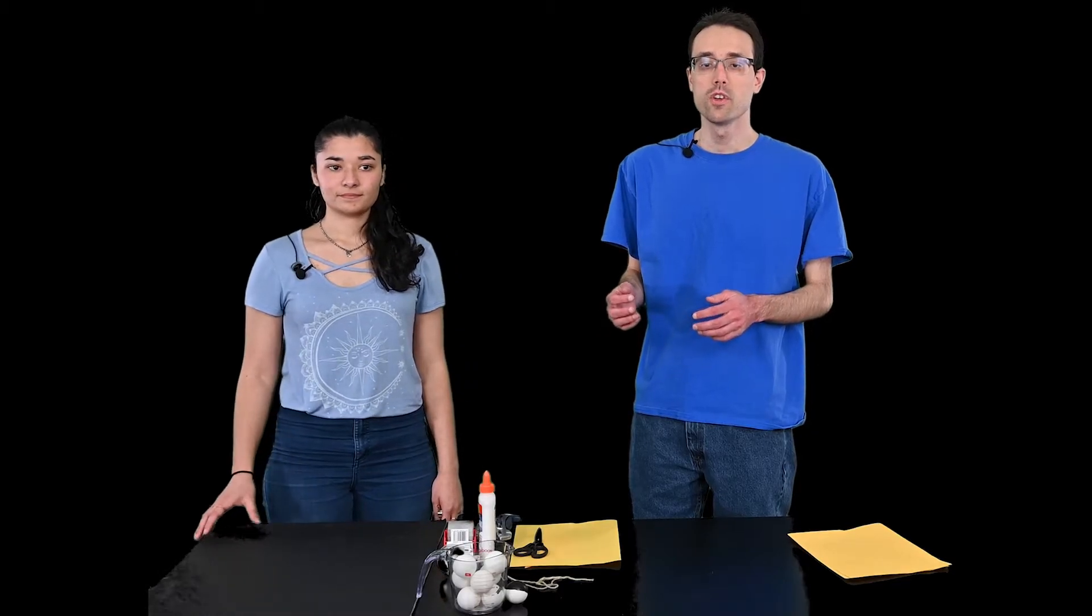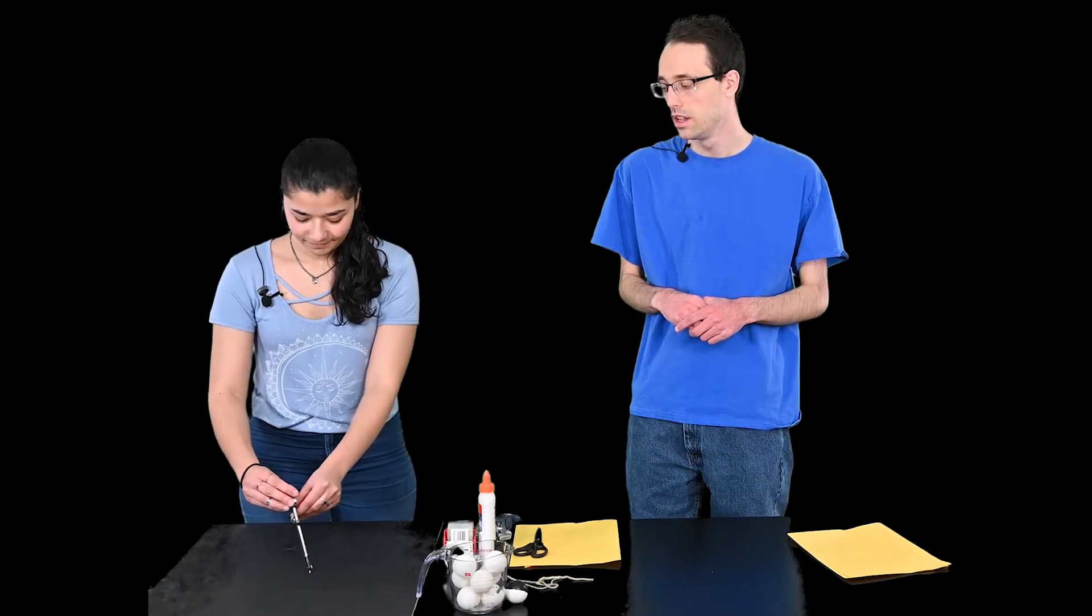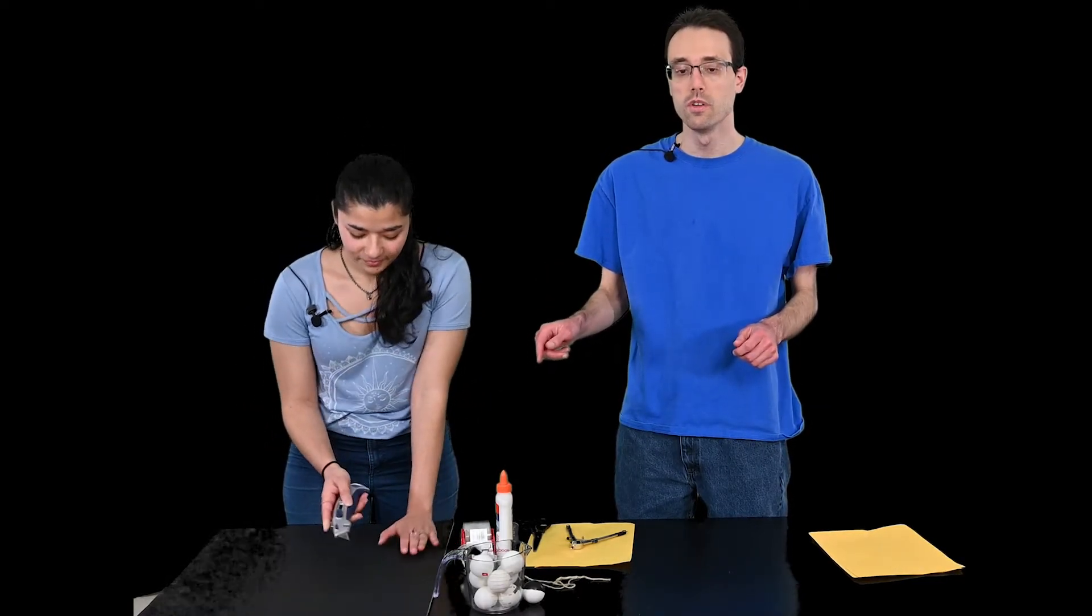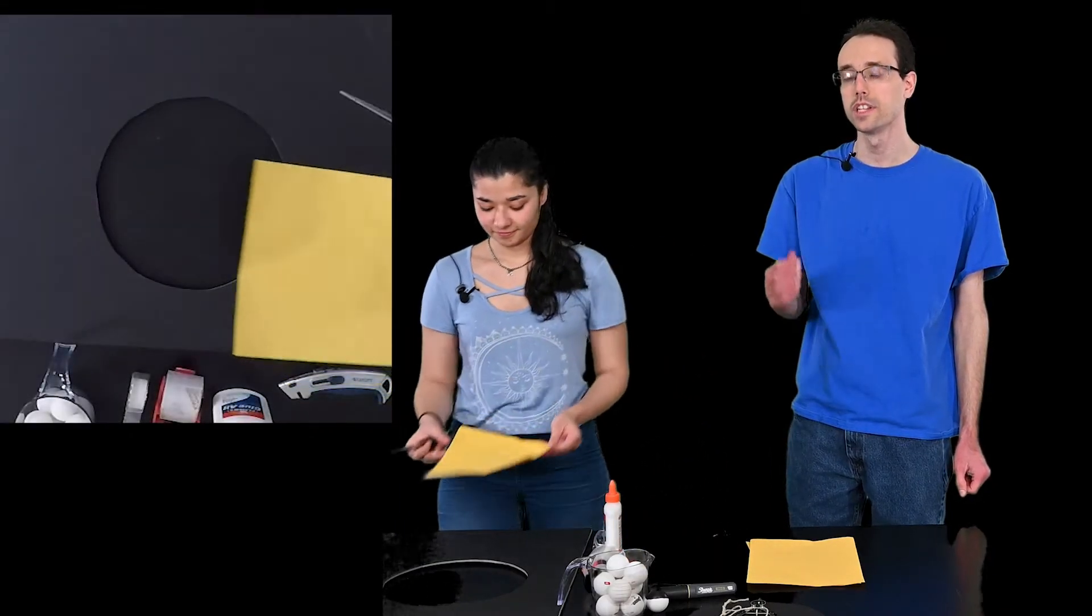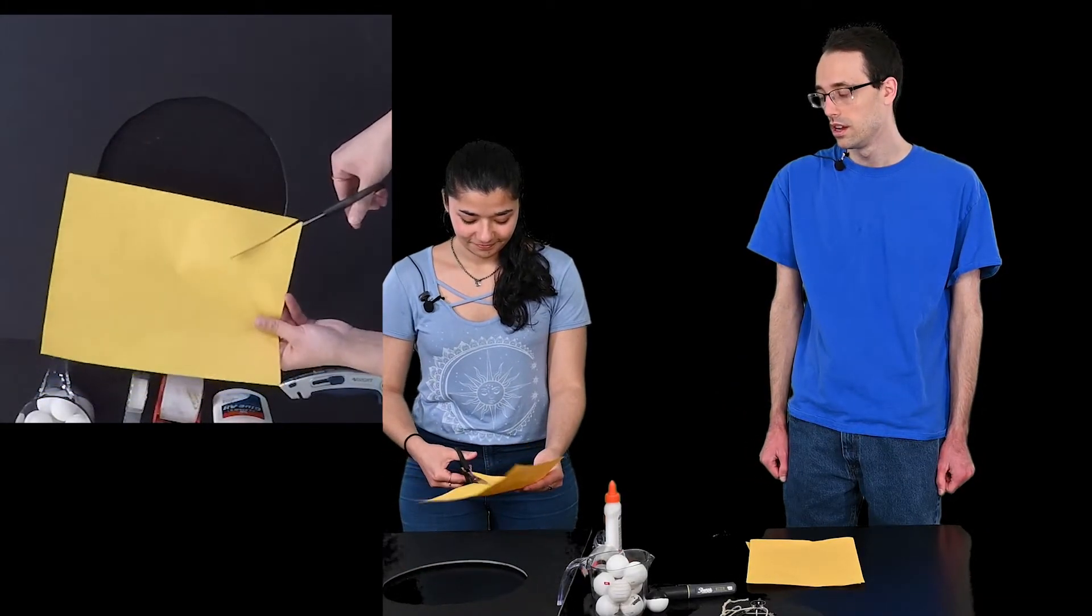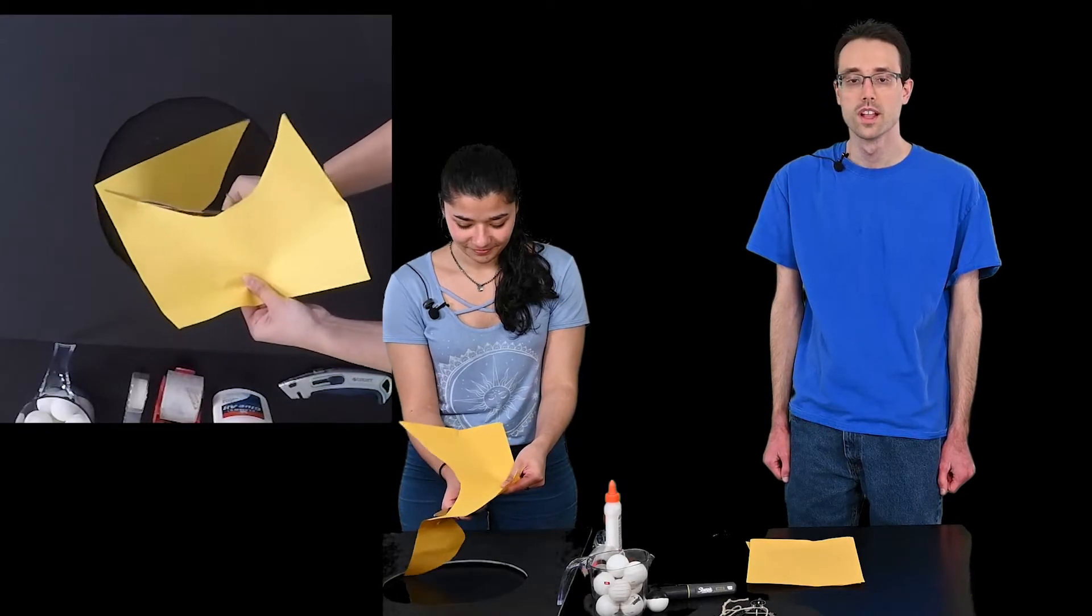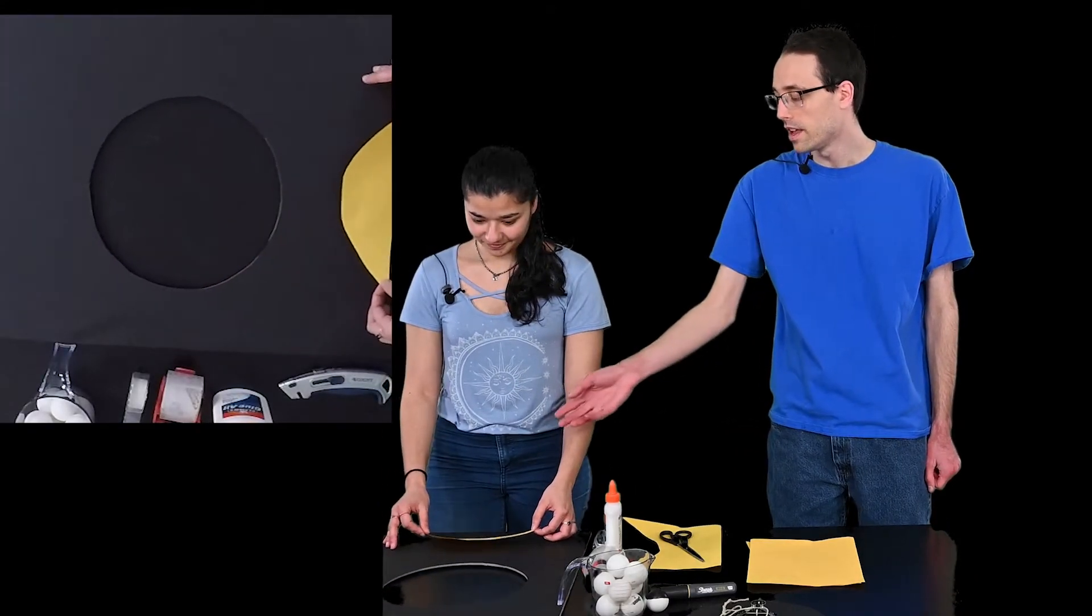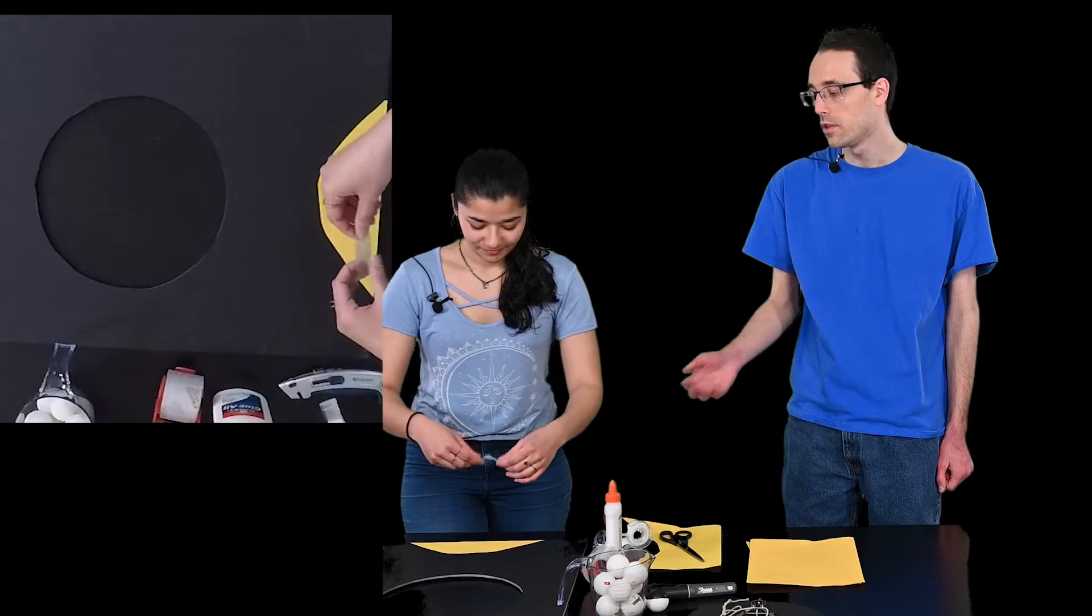To begin, draw a circle on the cardboard with the compass. Now this circle should be bigger than your head. Next, with the help of an adult, take the box cutter and cut out the circle from the cardboard. Next, take your yellow sheet of paper and your scissors and cut out a semicircle, which will be your sun. Once you have your sun cut out, place it on the end of the cardboard and either glue it or tape it.